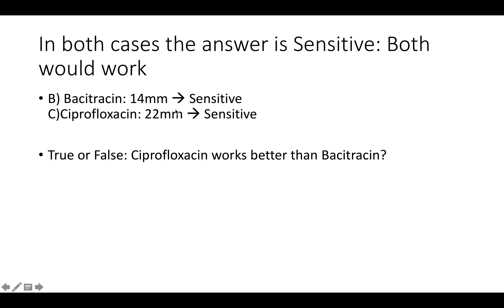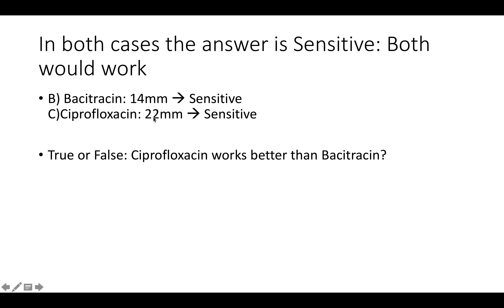Here's a question I always like to ask: ciprofloxacin works better than bacitracin — is that true or false? So 22 millimeters is greater than 14 millimeters, however the answer is false. Just because the zone of inhibition is larger than another doesn't mean it works better — we don't compare apples to apples here. Both antibiotics will work, and we don't rank them based on the size of the zone. Bacitracin is actually a topical antibiotic, while ciprofloxacin can be an oral application. Both work — they either work or they don't, and that's what we're determining.